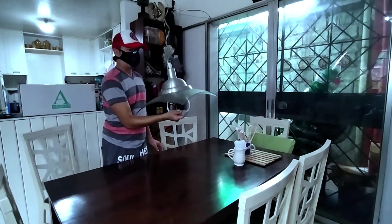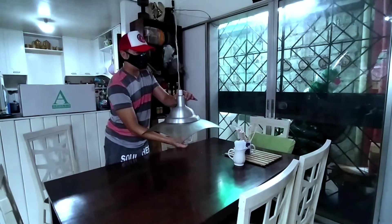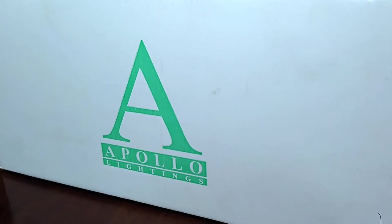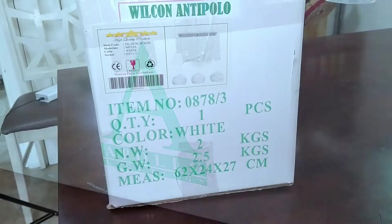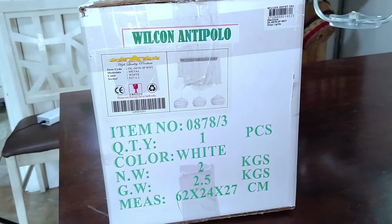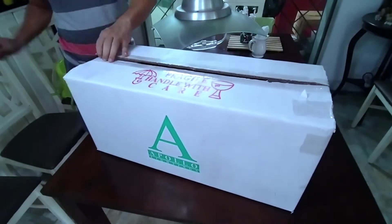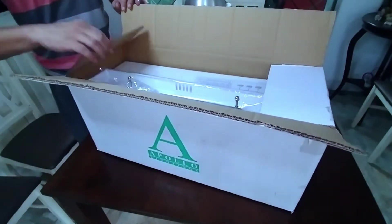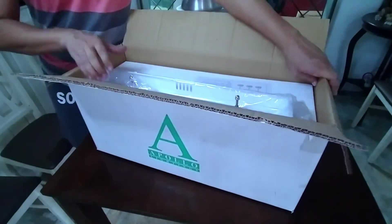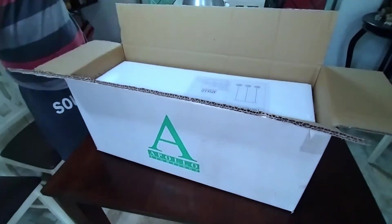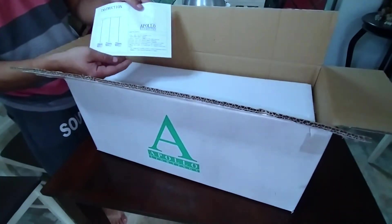So my brother and I went to Wilcom Depot and bought this drop light manufactured by Apollo Lightings. We got this specific model for a little over 2,000 pesos. Let's open this up and see what's inside. We have the ceiling bracket and cover, we have this assembly instruction, and one, two, and three lamp fixtures.